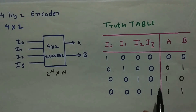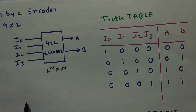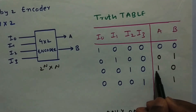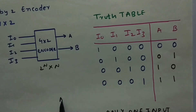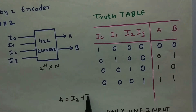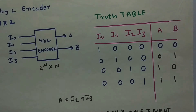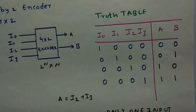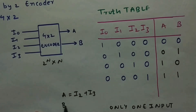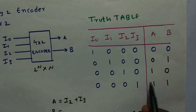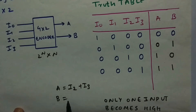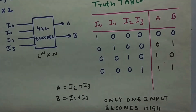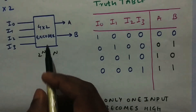Only one input can be high at a time; multiple inputs cannot be high simultaneously. Now let's derive the output equations. From the truth table, A is high only when I2 or I3 is high, so A = I2 + I3. B is high when I1 or I3 is high, so B = I1 + I3. You can verify these using a K-map as well.